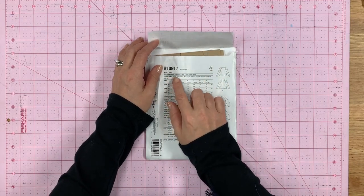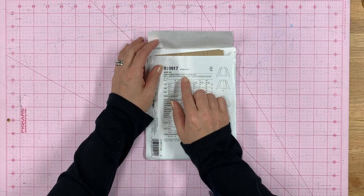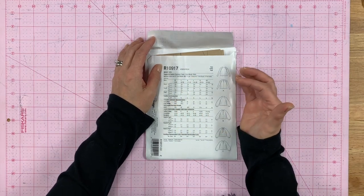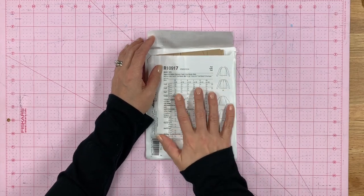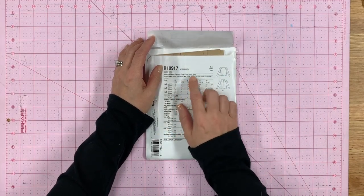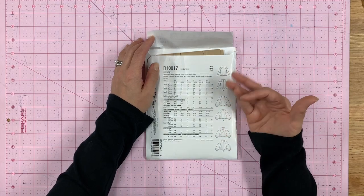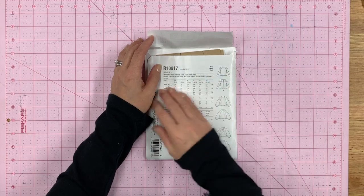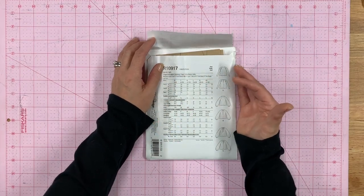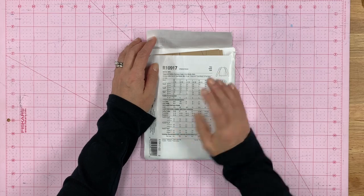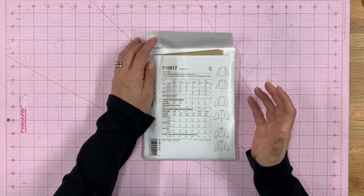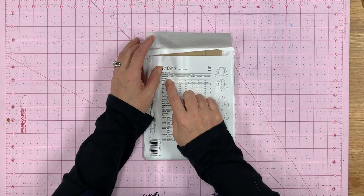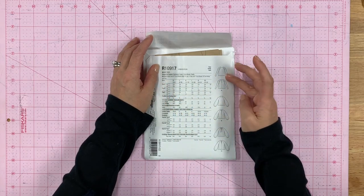It has suggested fabrics to be charmeuse, crepes, cotton blends, chiffon. If you're a beginner sewer, this is a great pattern. I would definitely stick with cotton blend for this pattern, but it can be made in so many different other types of fabric. These are suggested fabrics, they're not set in stone. You can deviate from this a little bit.